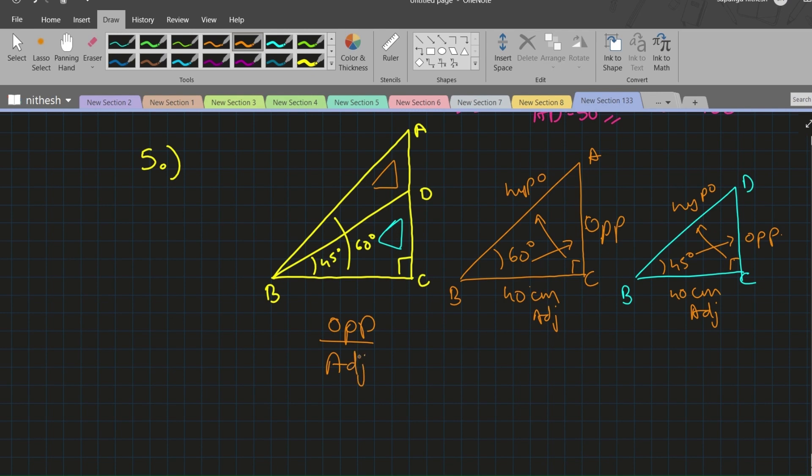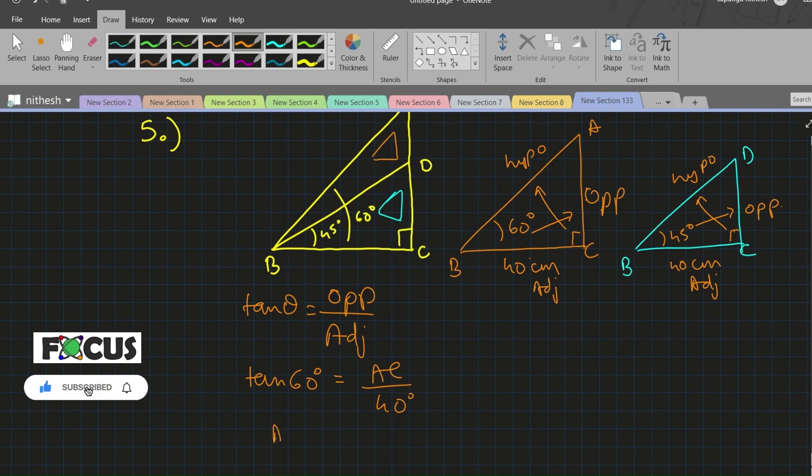Opposite upon adjacent, we have tan θ. In the place of θ we'll substitute 60 degrees. Opposite will be AC and adjacent will be 40. We will cross multiply this. It will be AC = tan 60° × 40. Tan 60° is √3, so AC = 40√3.